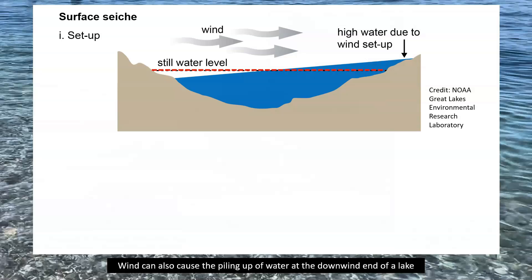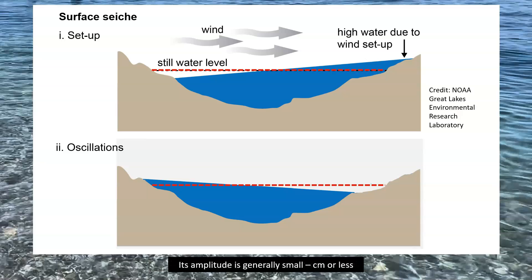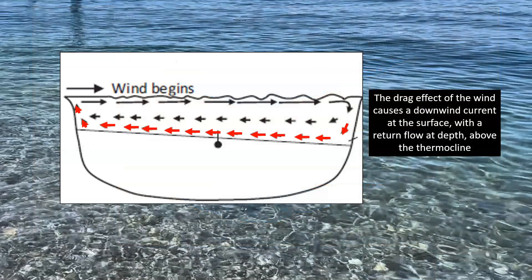Wind can also cause the piling up of water at the downwind end of a lake. When the wind stops, the water surface rocks back and forth — this surface rocking motion is referred to as a seiche. Its amplitude is generally small, centimeters or less, but in large lakes seiches can occasionally be more than a meter in amplitude and cause significant flooding damage and shoreline erosion.